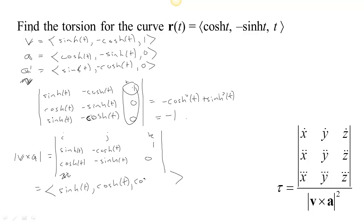Oh, so that's going to be cosh²t - sinh²t. And cosh²t - sinh²t = 1. Okay, so we have now that, oh, that's just V cross A.